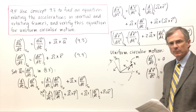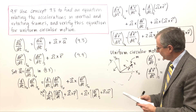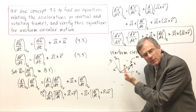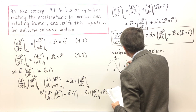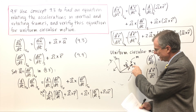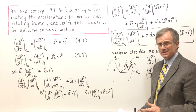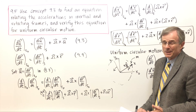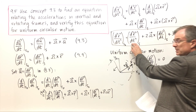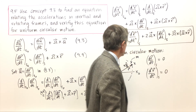What is d²r/dt² as seen in the rotating frame? That's the acceleration of this mass from the point of view of an observer rotating with it. That observer sees the mass always at the same position — two meters ahead — its velocity is zero and its acceleration is zero. So this term is also zero, and we're left with only one term: omega cross omega cross r.